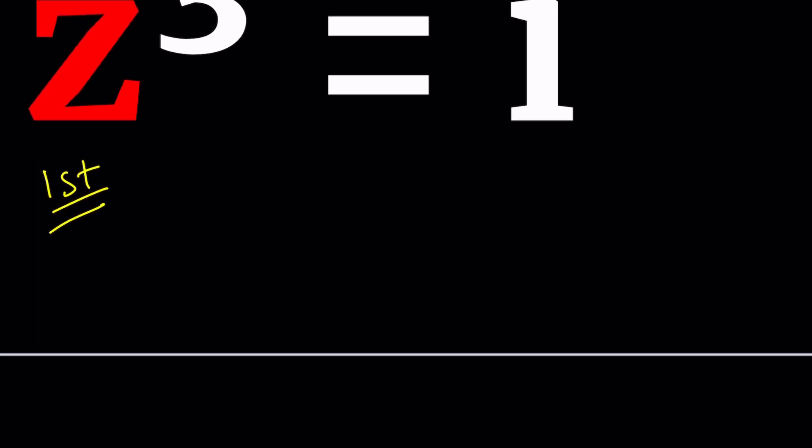For my first method, I'm going to replace z with a + bi for two reasons. One, that's the name of this channel. Two, it solves the problem. It's a general strategy for solving equations. You can always replace z with a + bi. Let's see what happens.